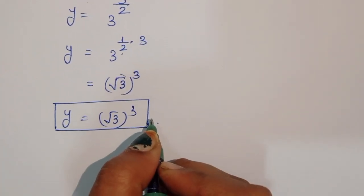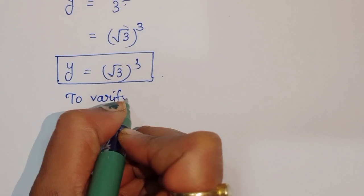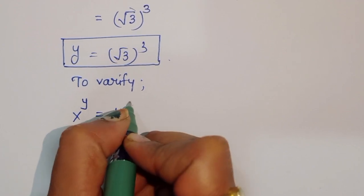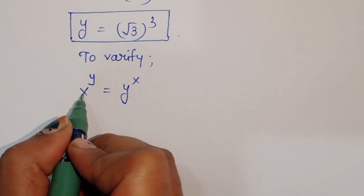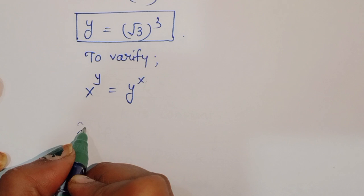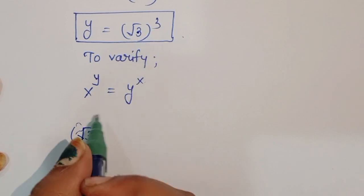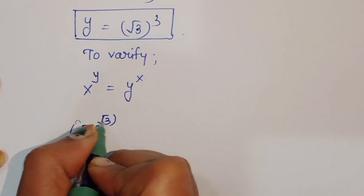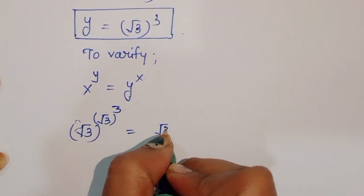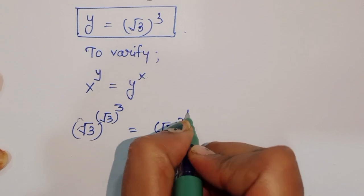Now we verify these values. The original equation is x^y = y^x. With x = √3 and y = (√3)^3, the left side is (√3)^((√3)^3) and the right side is ((√3)^3)^(√3).